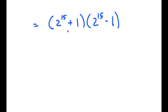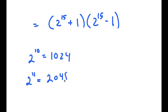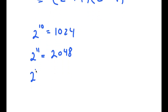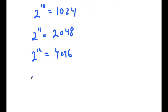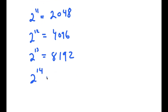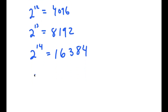Now, what's the value of 2 to the power of 15? Well, 2 to the power of 10 is 1,024. Then 2 to the power of 11 is double that, which is 2,048. 2 to the power of 12 is 4,096. 2 to the power of 13 is 8,192. 2 to the power of 14 is 16,384. And finally, 2 to the power of 15 is double of that, which is 32,768.